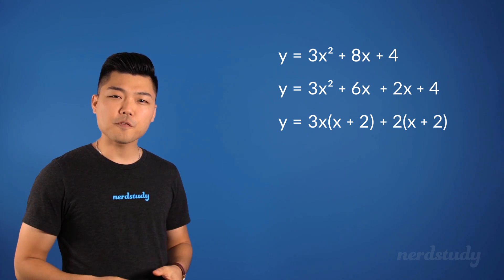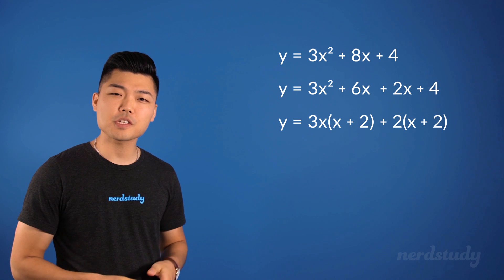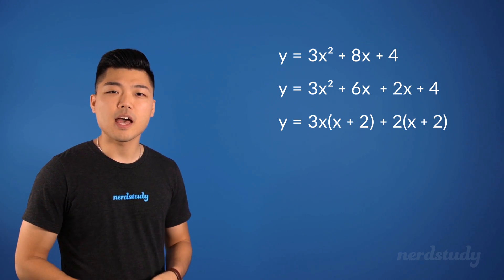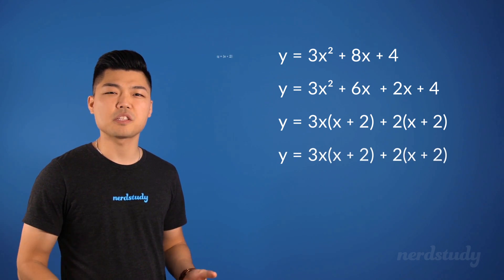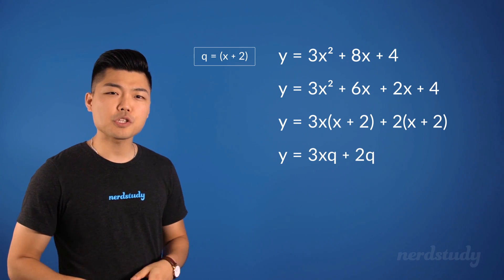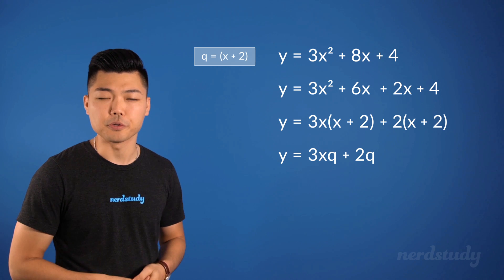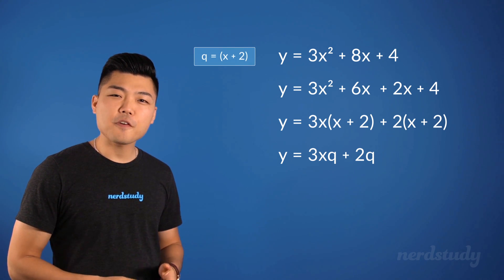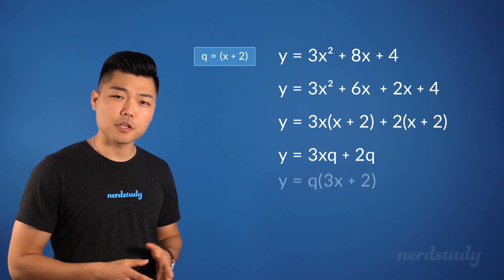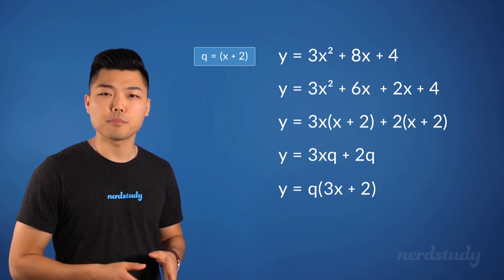If you're still confused as to why we're able to do this, just think of these two expressions as the variable, let's say, q. And we'll just remind ourselves that this is equal to x plus 2. Now just like any other equation, we can factor out this q to get q times 3x plus 2.